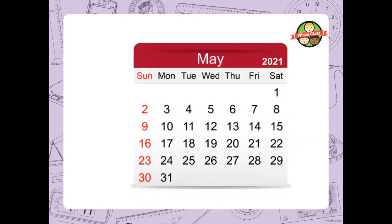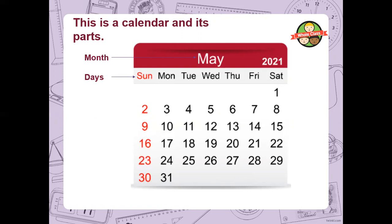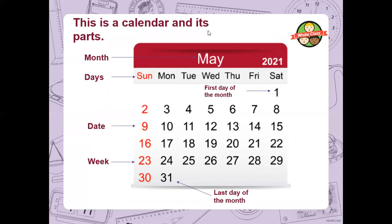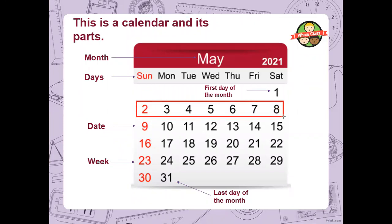Now, this is the calendar for the month of May. Let's study the different parts. This particular area shows the name of the month. Over here, these are the days — Sunday, Monday, Tuesday. This is the first day of the month, and these are the different dates throughout the month. We can say that a new week starts on every Sunday. A week has exactly seven days, so counting from Sunday: one, two, three, four, five, six, seven — and a new week starts again on the 9th of May.